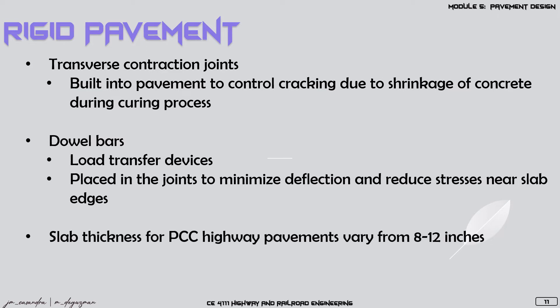For the slab thickness of PCC highway pavements or rigid pavements, it will vary from 8 to 12 inches. Unlike flexible pavement, which has a top layer thickness of only 2 to 4 inches, rigid pavements have a much larger thickness.